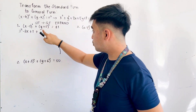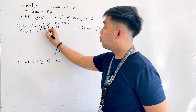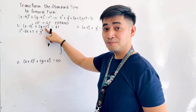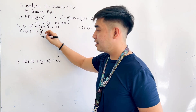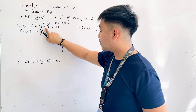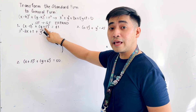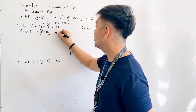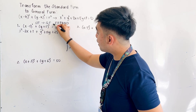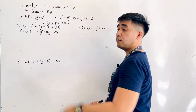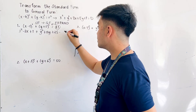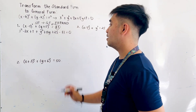Now let us expand (y plus 5) squared. y times y gives y squared; five times two is ten, and ten times y gives plus 10y; and five times five gives plus twenty-five. Then we transfer the 81 from the right side to the left side — since it is positive 81, it becomes minus 81, and the right side becomes equal to zero.